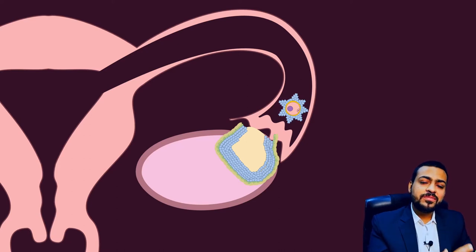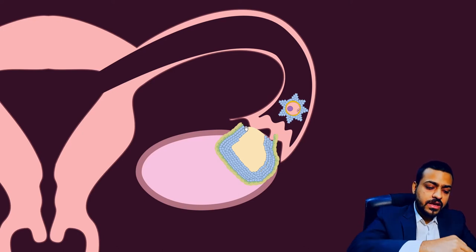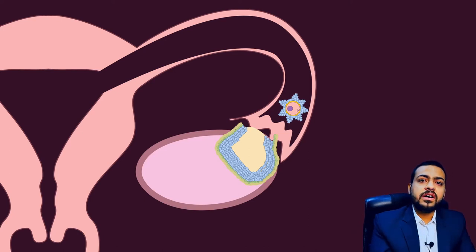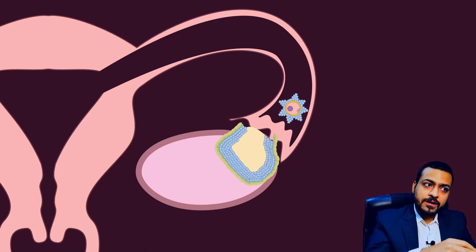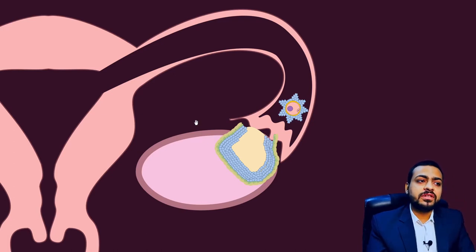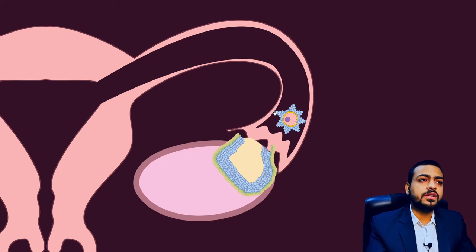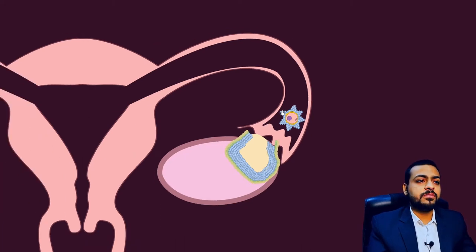Why? Because the fallopian tube or uterine tube is supplied with these specialized processes called fimbriae, and these fimbriae sweep on the surface of the ovary at the point of that bulging stigma and they pick up the secondary oocyte. In this way, the oocyte comes into the infundibular part of this uterine tube or fallopian tube.